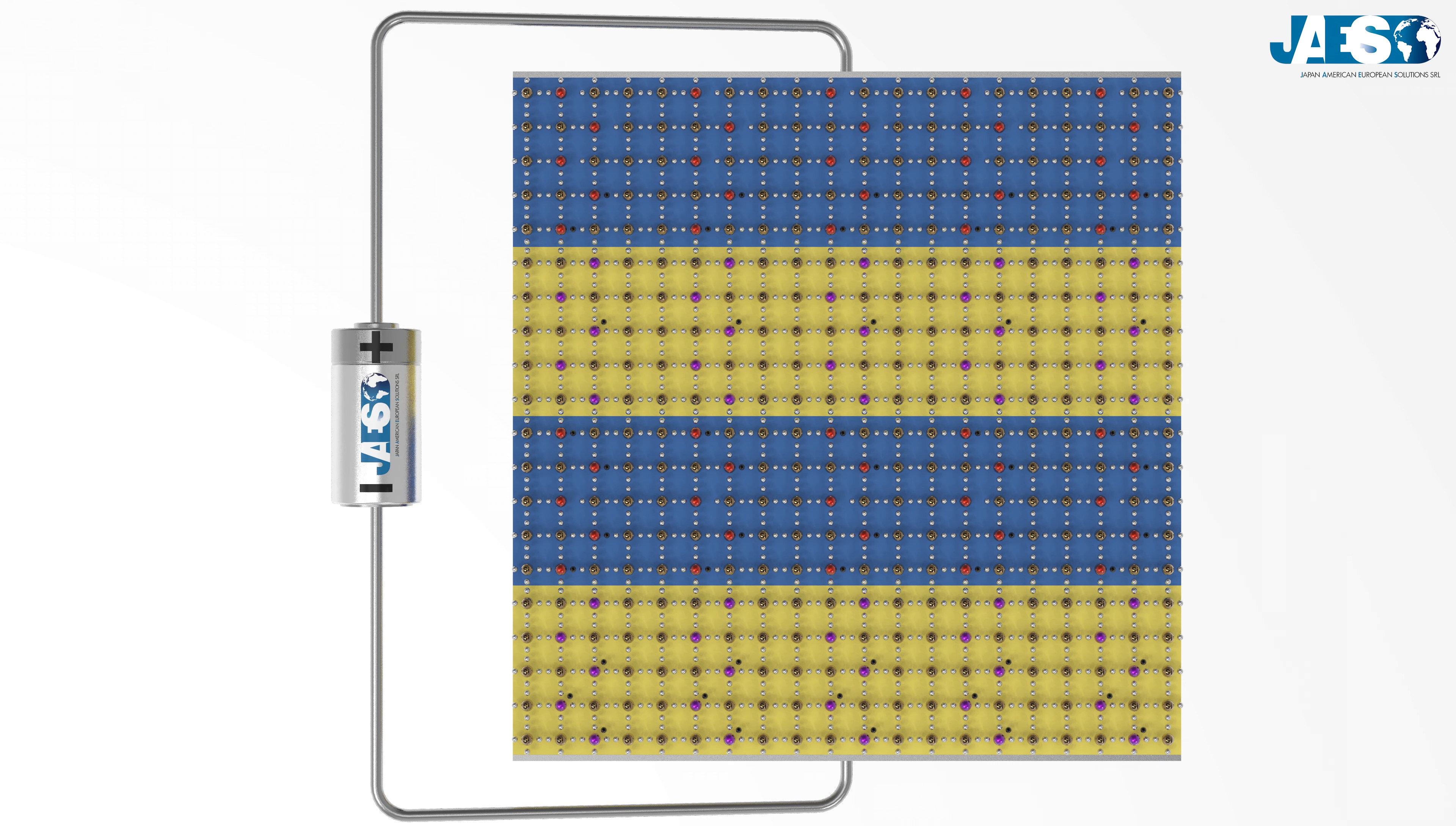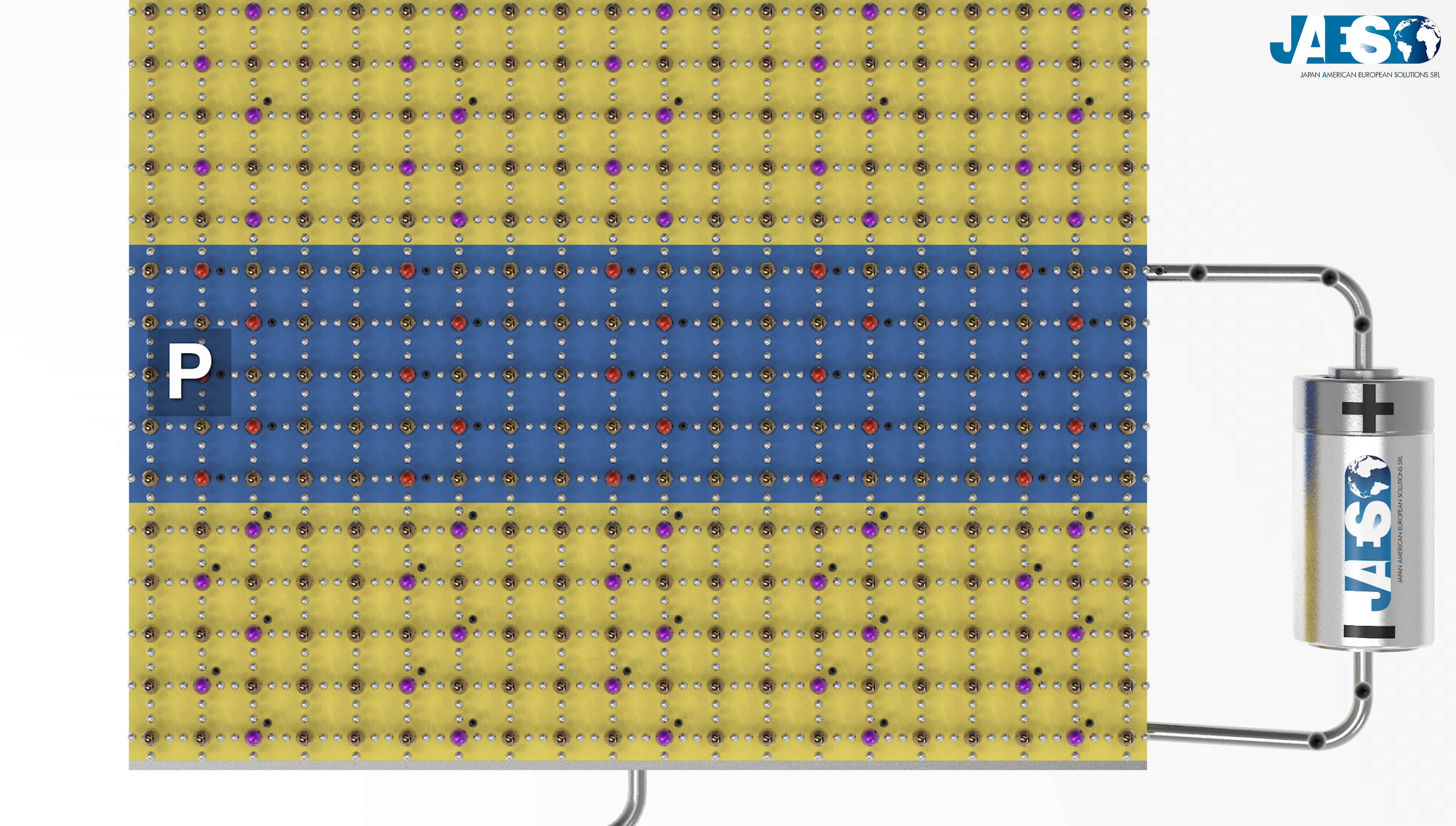The electrons pass through the first N layer, overcome the first forward bias, and flow into the P layer.